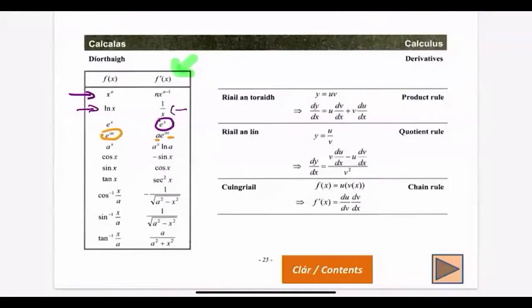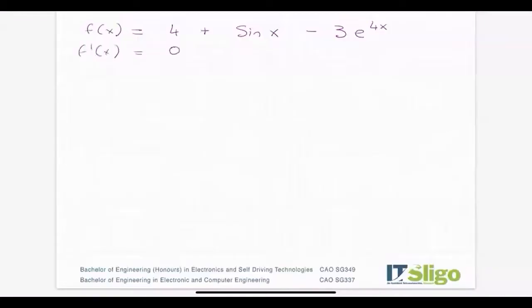The coefficient 3 stays, and we take down the power 4 from e^(4x), giving us -12e^(4x).